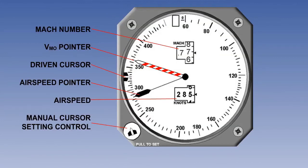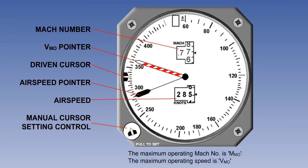The second type of Mach airspeed indicator is an electronic instrument, which uses information from an air data computer to display the Mach number and airspeed in digital form. We can see a typical example here. The VMO pointer is commonly known as the Barber's Pole because of the diagonal stripe marking. High-speed aircraft are limited to a maximum operating speed. The maximum operating Mach number is known as MMO. The maximum operating speed is known as VMO.